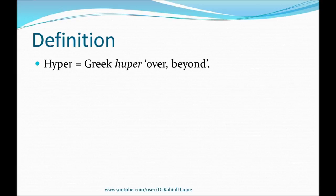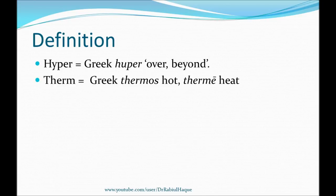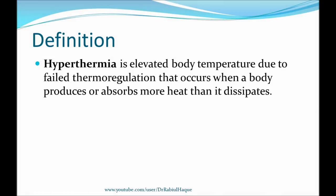First question: what is hyperthermia? The word hyperthermia is derived from two Greek words — hyper, meaning over or beyond, and therm, derived from Greek thermos meaning heat, with -ia as the suffix. So the literal meaning of hyperthermia is overheating. Hyperthermia can be defined as elevated body temperature due to failed thermoregulation that occurs when a body produces or absorbs more heat than it dissipates.